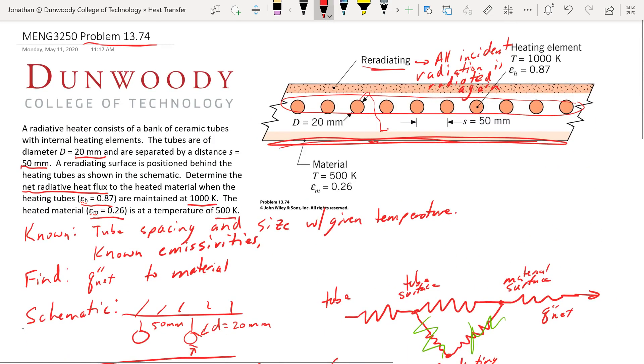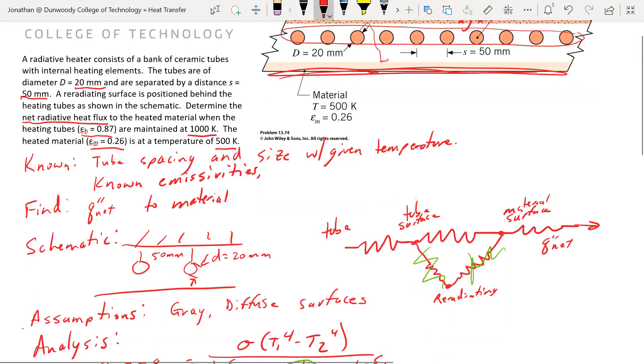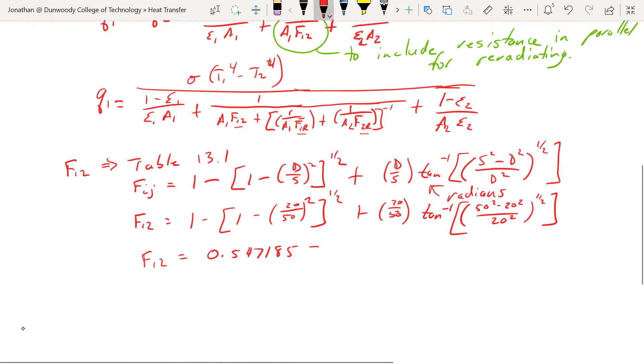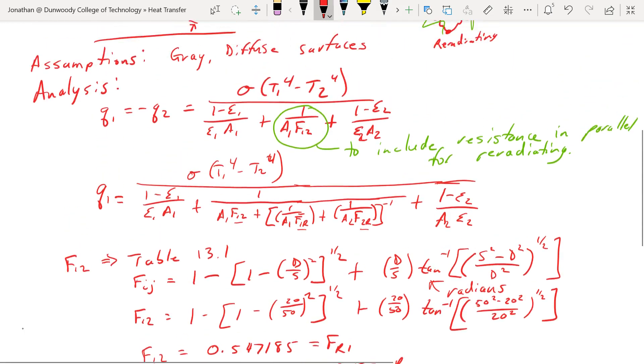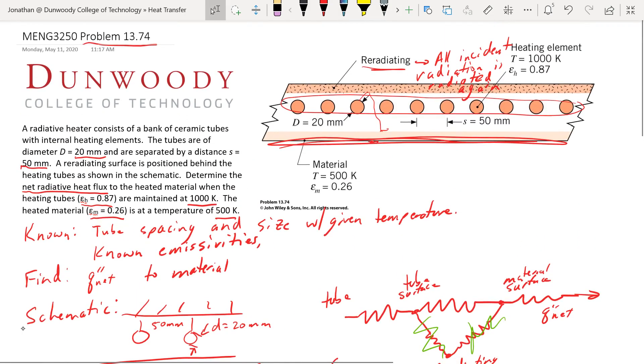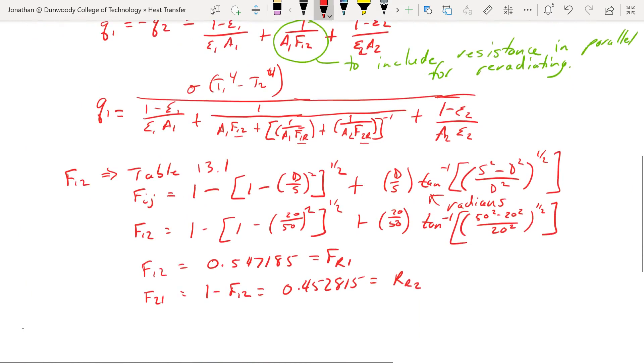So it's kind of symmetric about this. If I'm looking up here, what I'd have going this direction is the same as I'd have going in the other direction, they're going to see the same thing, so it's also going to be equals FR1. F21, the inverse of that, is going to be 1 minus F12 equals 0.452815. Now it's also going to be the same as FR2.